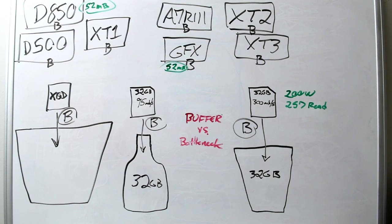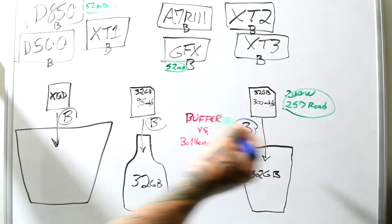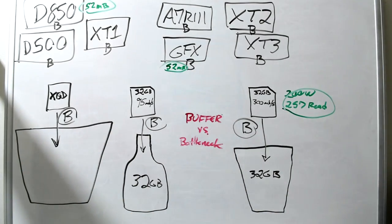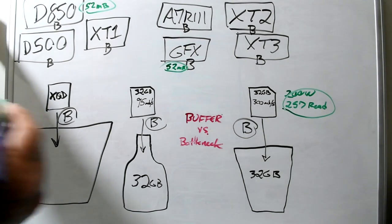Like on the older 280s, which are only like a year old, the write speed and the read speed, 257 megabit per second read speed, but 200 megabit per second write speed. Let's have a buffer versus bottleneck discussion.